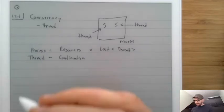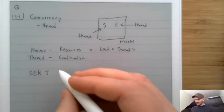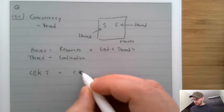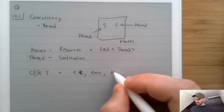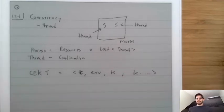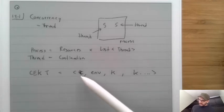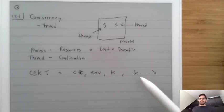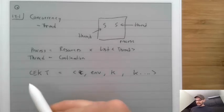Meaning that in terms of the CEK machine, you can think of there being something like the CEK machine with threads. There would be the currently active code, there would be the environment for that currently active code, there would be the current continuation, and then there would be more continuations for the other threads. These continuations are basically suspended threads that would be run in the future when they were ready. They don't need to contain an environment because continuations already embed whatever the environment is.